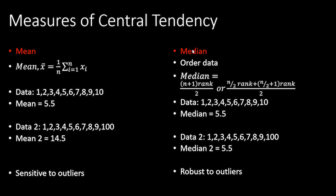A more robust measure of central tendency is the median. To calculate it, you order the data from smallest to largest and find the midpoint — either the (n+1)/2 rank value or the average of the n/2 and n/2+1 ranks. For the dataset 1 through 10, the median is 5.5, the average of 5 and 6. If you have a data entry error replacing 10 with 100, the median remains completely unchanged at 5.5, making it extremely robust to outliers.